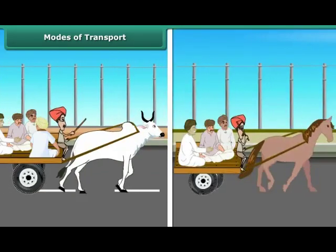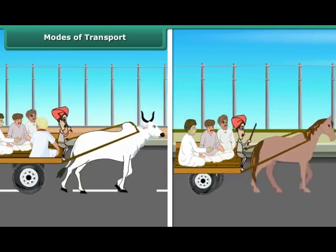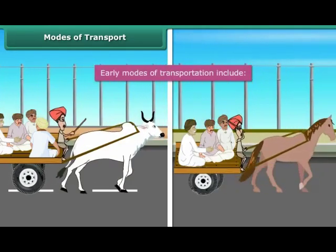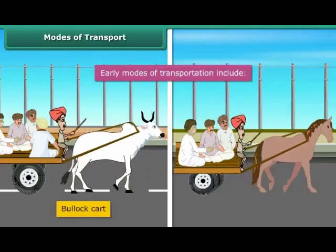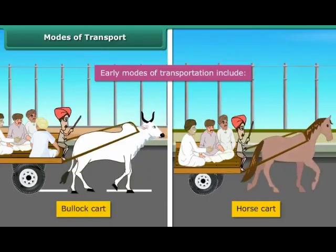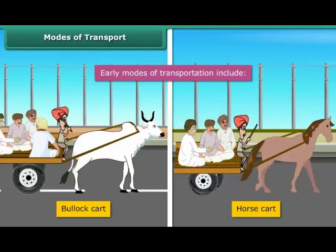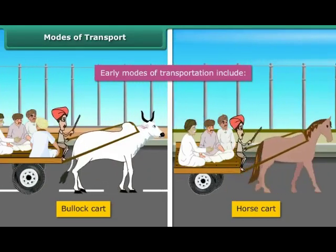Modes of transport. Have you wondered how people travelled in the earlier days? In the early days, people have always used animals to travel from one place to another. For example, bullock cart, horse cart etc. Can you imagine using a bullock cart to come to school every day now?